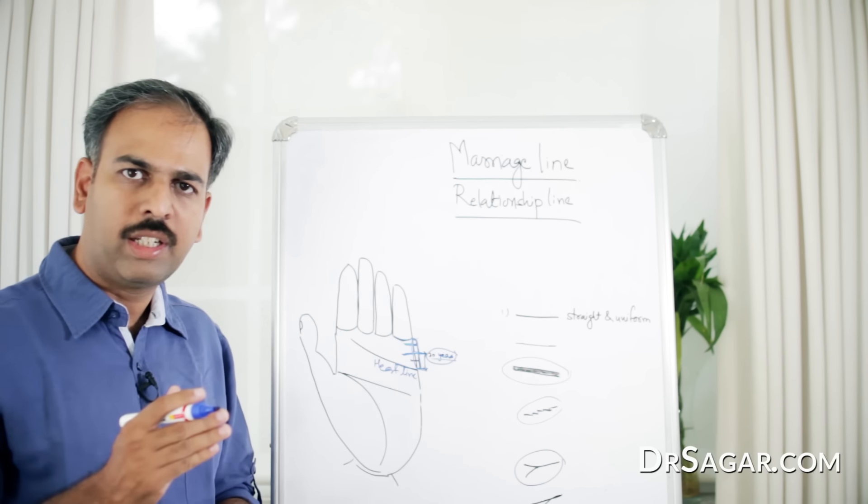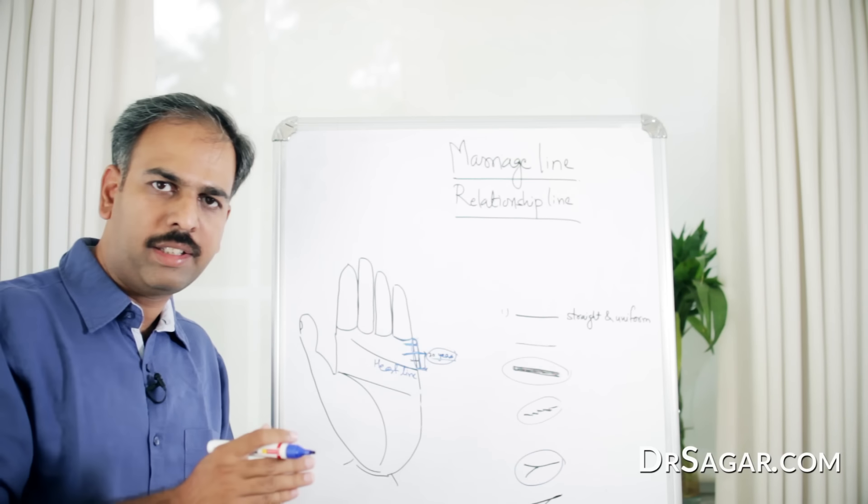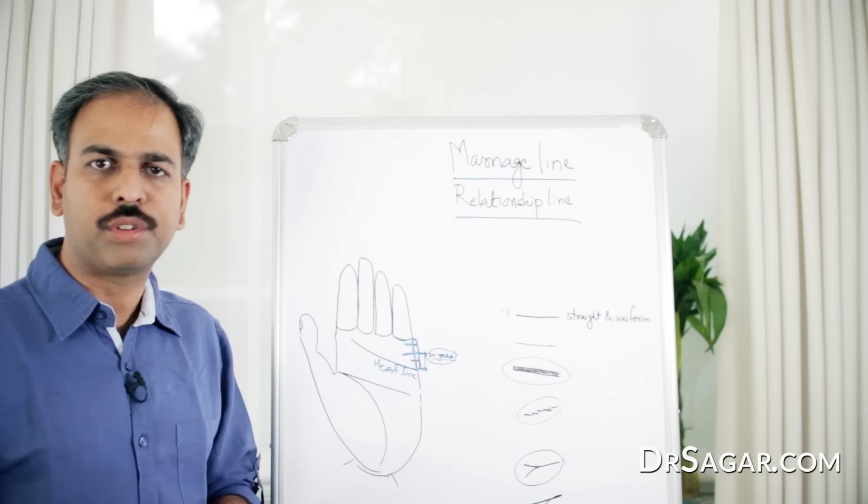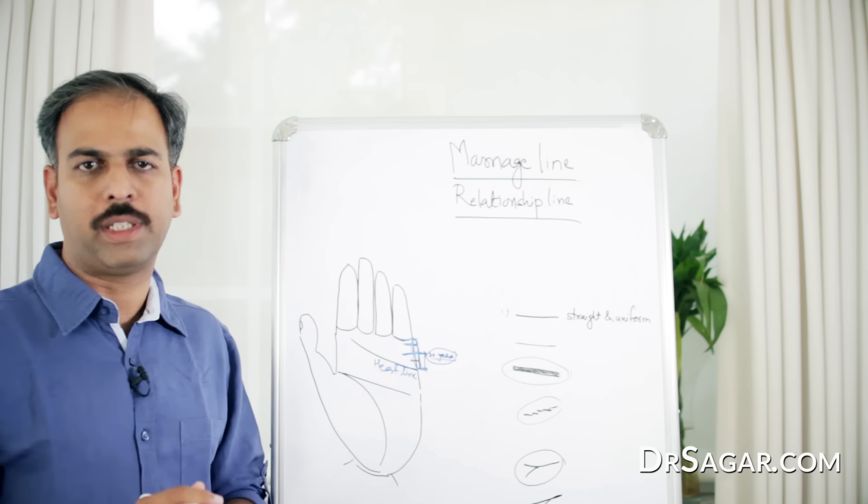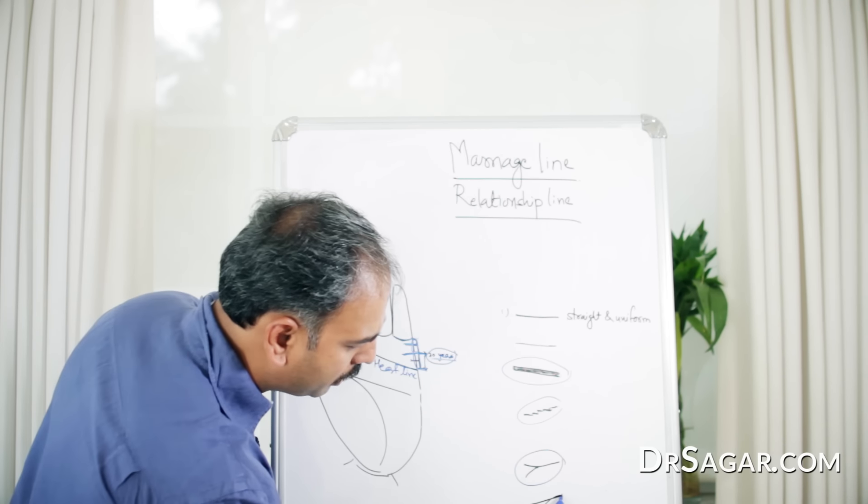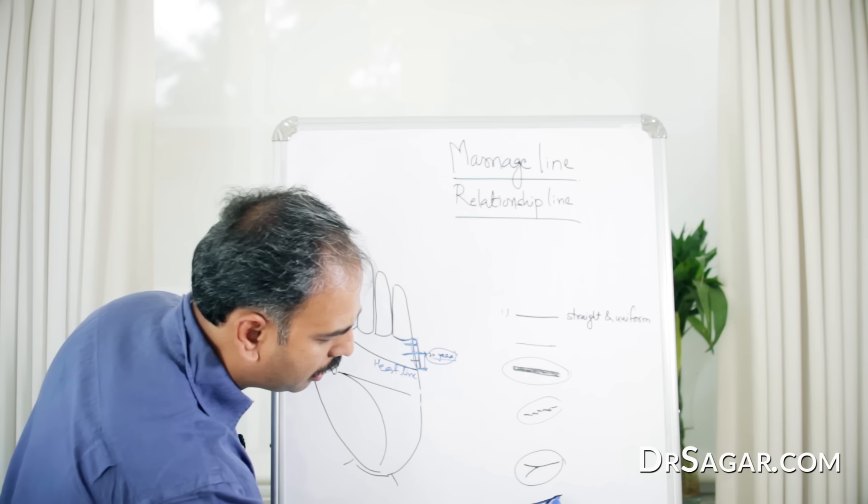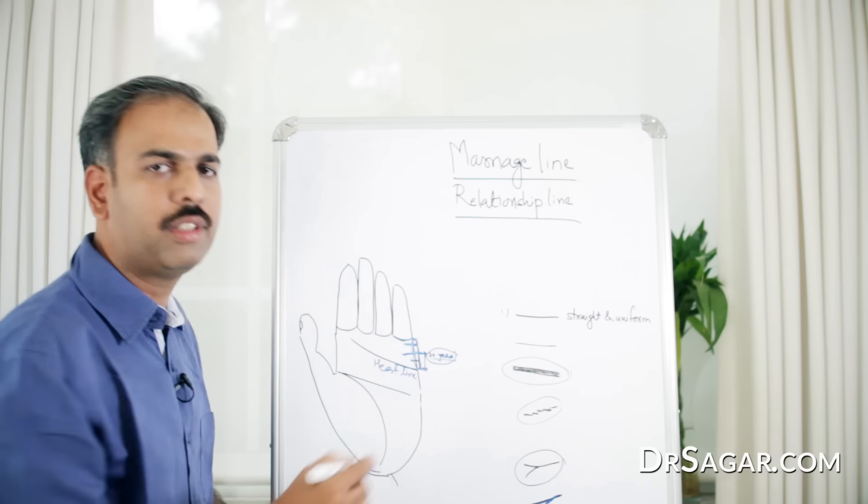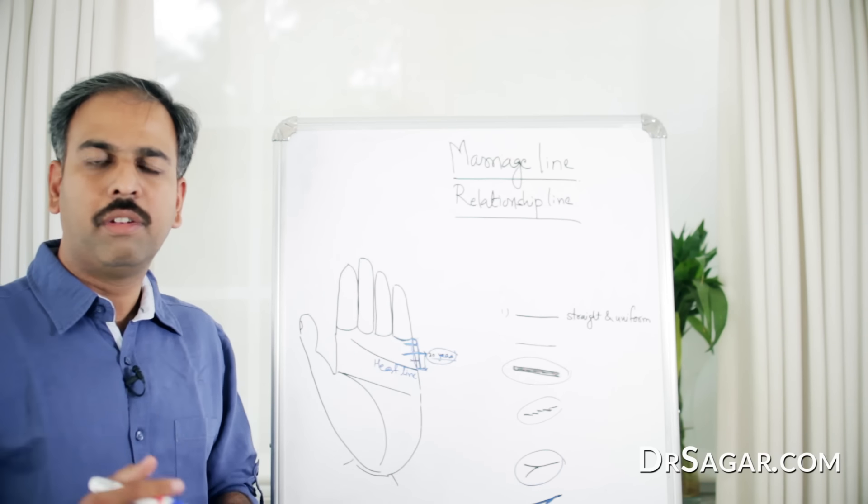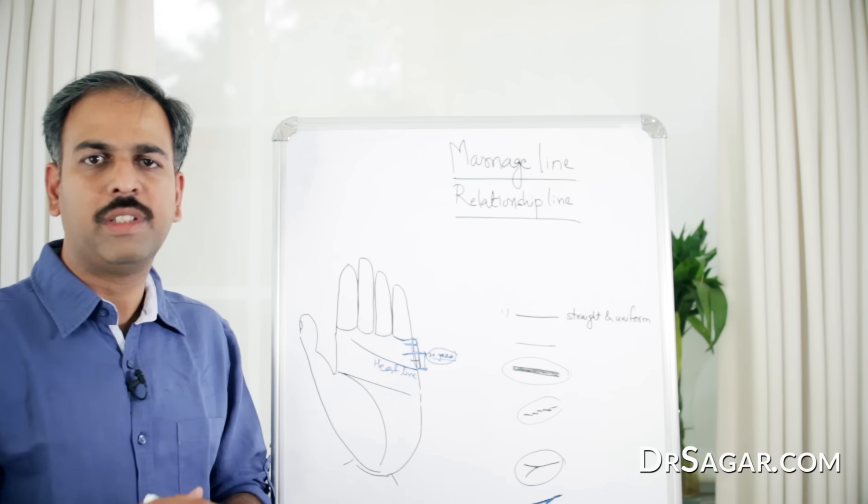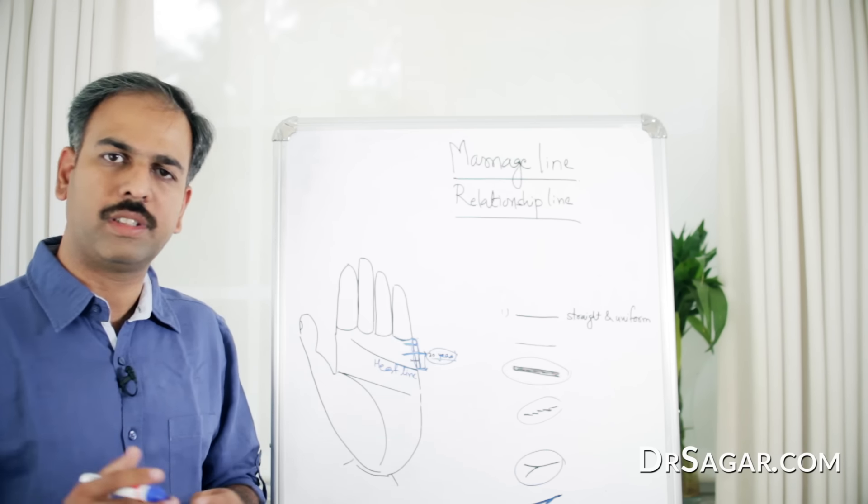The marriage line starts straight and in the middle way or at the end it bifurcates, which means only difference of opinion between two partners. But sometimes the line comes from the starting point, the branch comes from the starting point, which means from the first few years, the differences between two partners started.